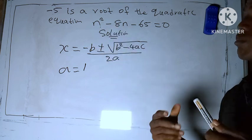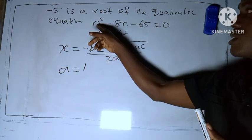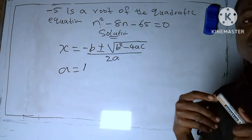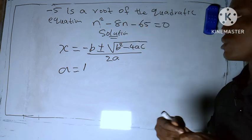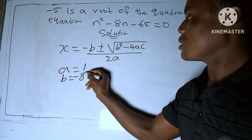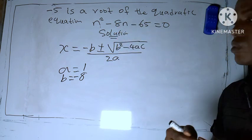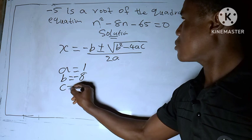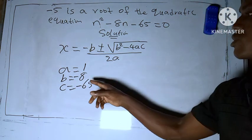So our a here is n. You know in mathematics, if the coefficient is not given, then we signify it as one. So here our a is one, then our b is the second one, which is b = -8. And c is the third one, c = -65.